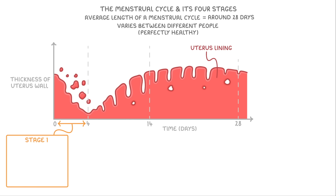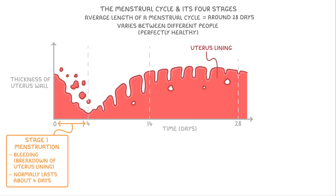Stage 1 is known as menstruation, and is the period of bleeding that normally lasts about 4 days, and is due to the breakdown of the uterus lining. We can see this in the first section of the graph, where the thickness of the lining is decreasing.